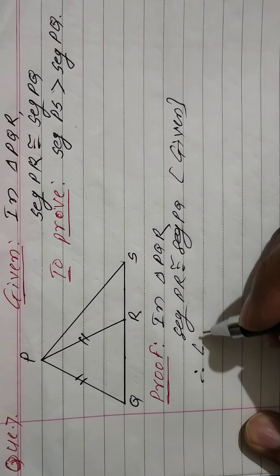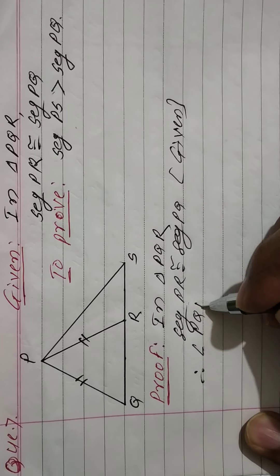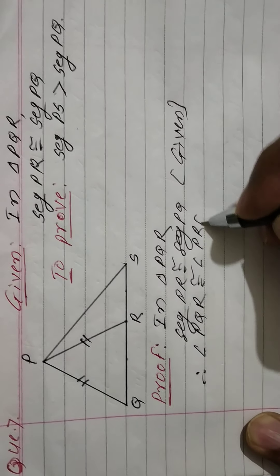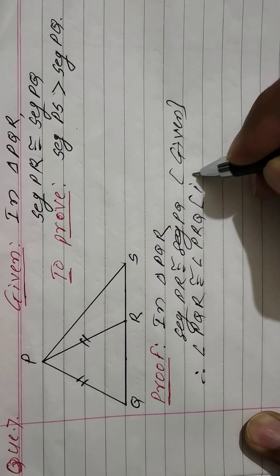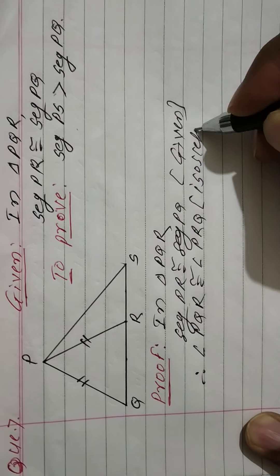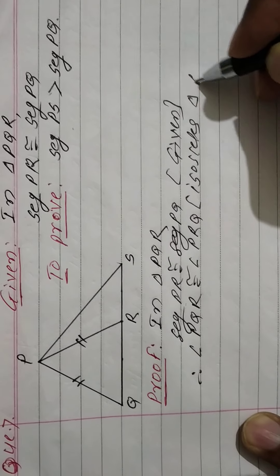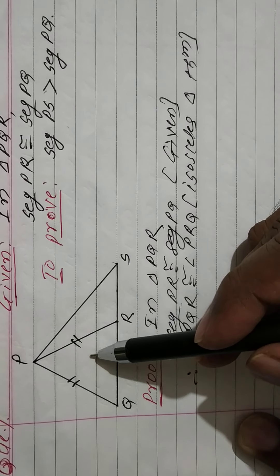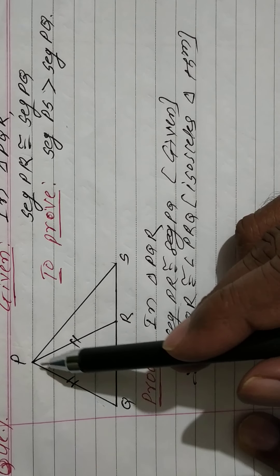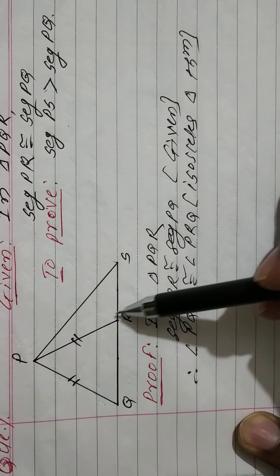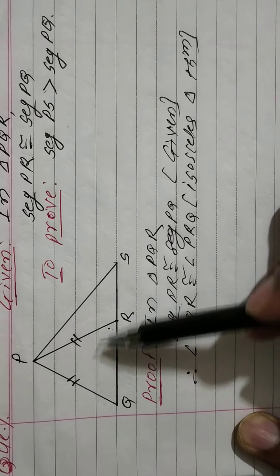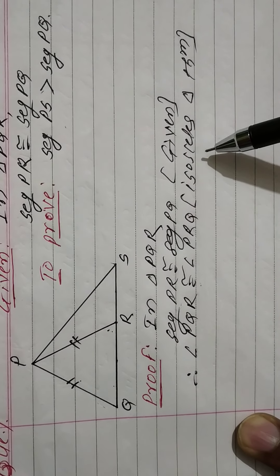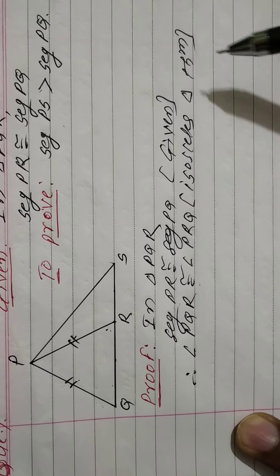If two sides are congruent, then their opposite angles are also congruent. PR's opposite angle is angle PQR, and PQ's opposite angle is angle PRQ — these are also congruent. If two sides are congruent, then opposite angles are also congruent, by the isosceles triangle theorem.